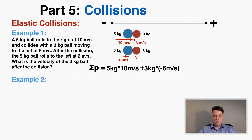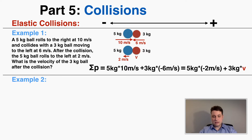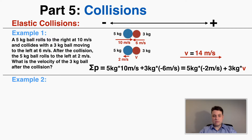Before the collision, the momentum is five times ten plus three times negative six, and that equals the total momentum after the collision. After the collision, the blue five kilogram ball is moving to the left, so its momentum is five times negative two, and the three kilogram ball's momentum is three times V, the velocity we're solving for. Solving for V using algebra, I find that V equals 14 meters per second to the right — the three kilogram ball moves away to the right at 14 meters per second.